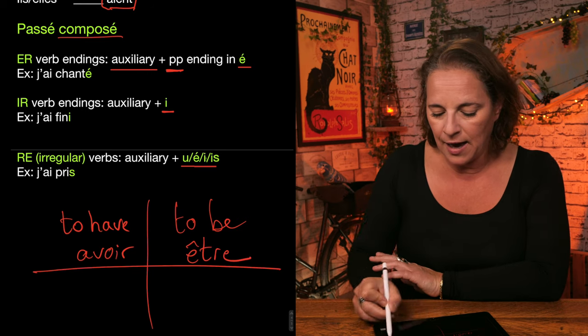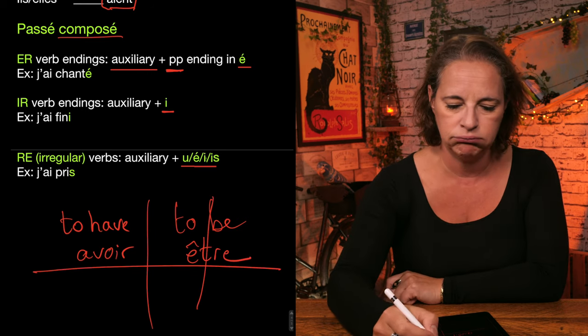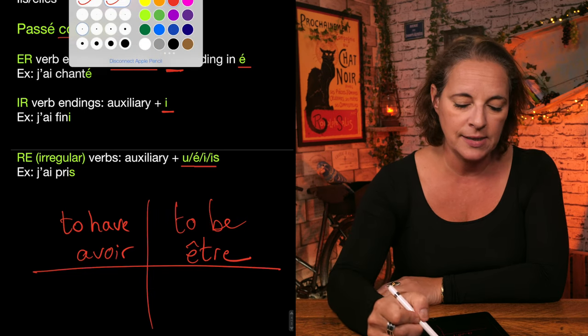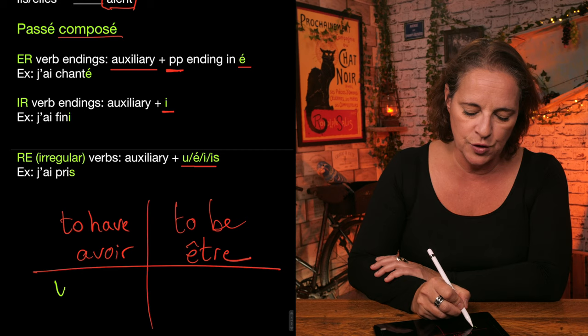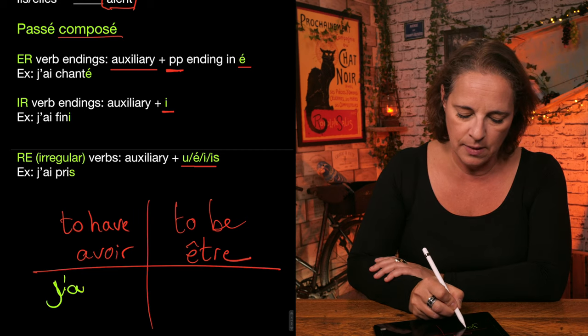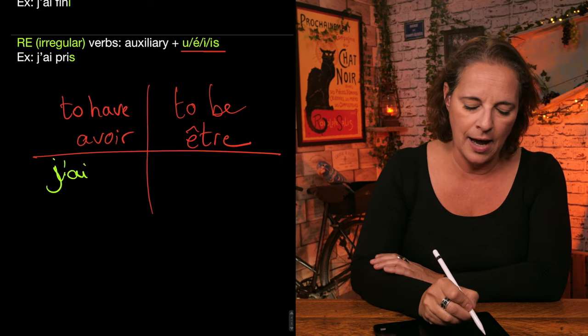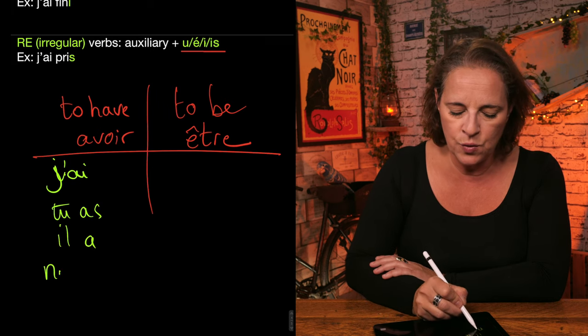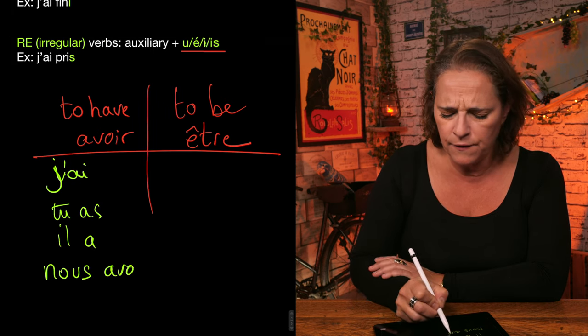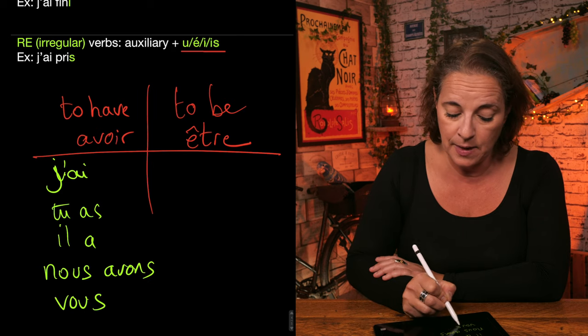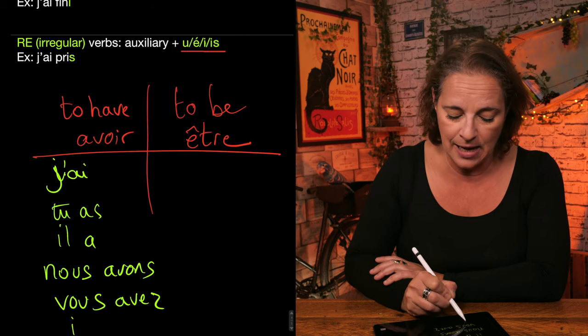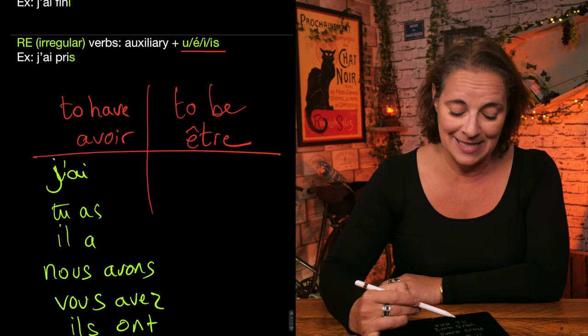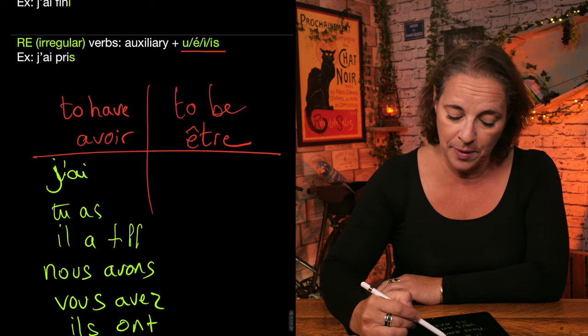So we have here, I am going for example to conjugate avoir, j'ai. Tu as. Il, elle, on a. Nous avons. Vous avez. And il, elle, on a. So it's quite simple. And anything that comes after that past participle, that means we are conjugated in the passé composé tense.